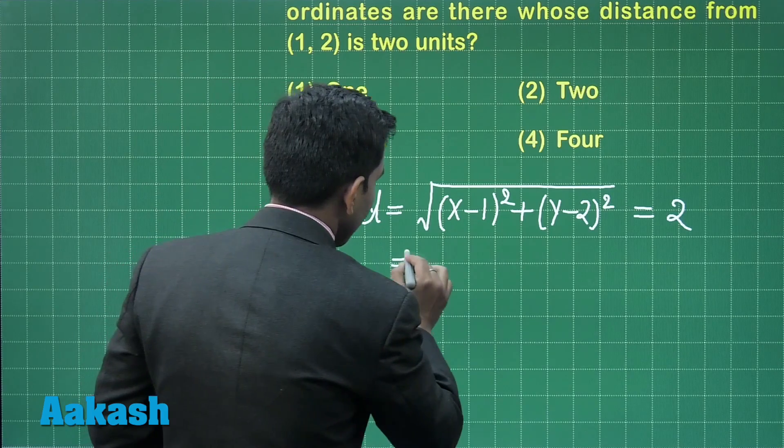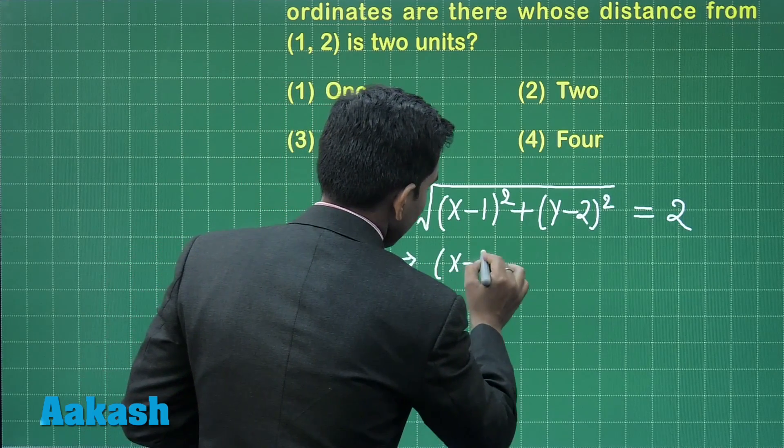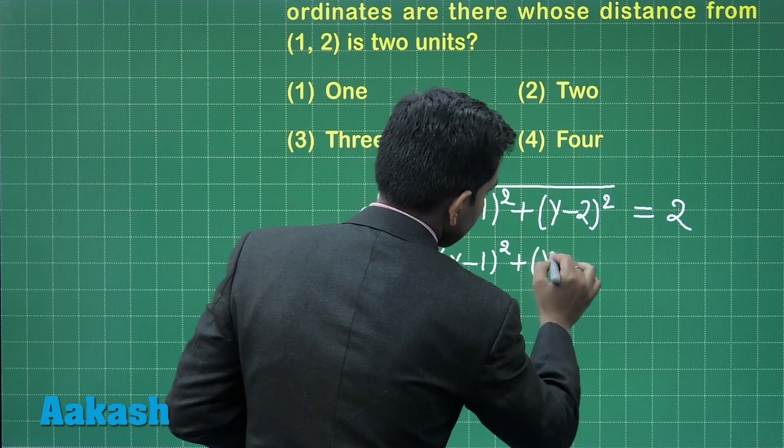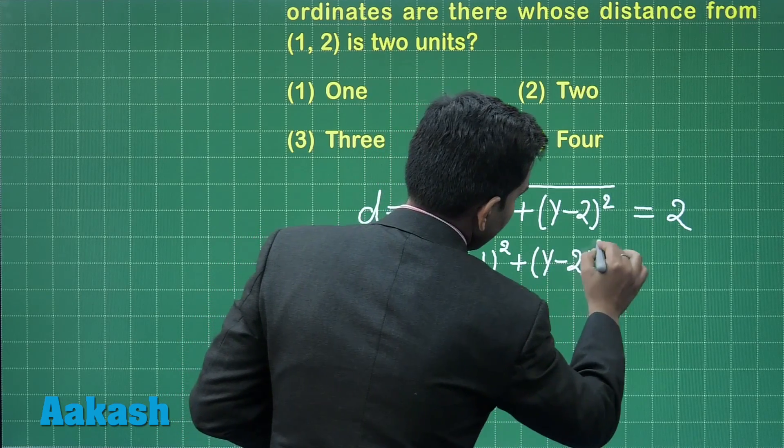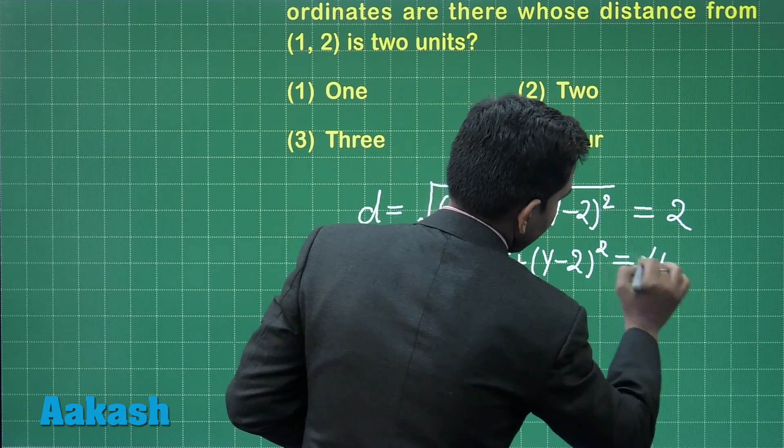When we further simplify, we get (x minus 1) squared plus (y minus 2) squared equals 4 on squaring both sides.